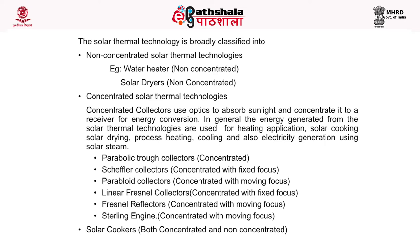In general, energy generated from solar thermal technologies is used for heating applications, solar cooking, solar drying, process heating, cooling, and also electricity generation using solar steam. Examples of concentrated solar thermal technologies include parabolic trough collectors, Scheffler collectors, paraboloid collectors, linear Fresnel collectors, and Stirling engines. Solar cookers use both concentrated and non-concentrated thermal technology.